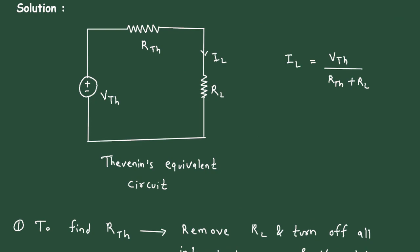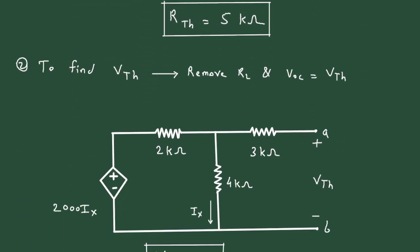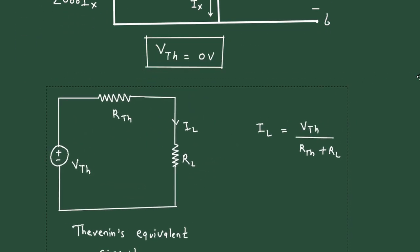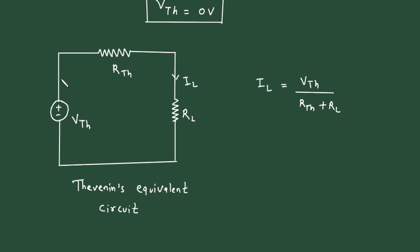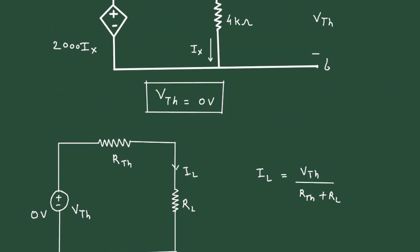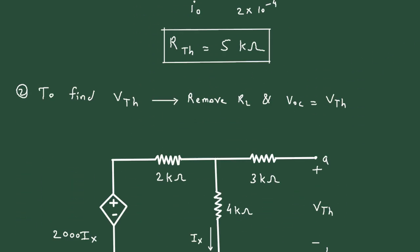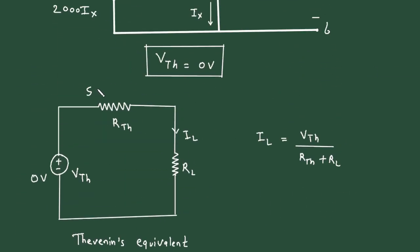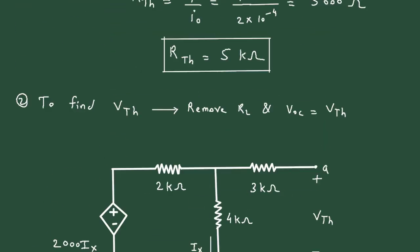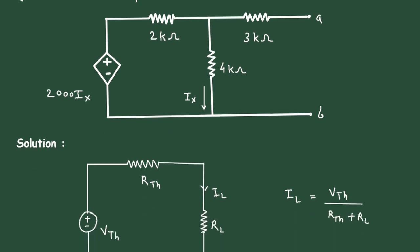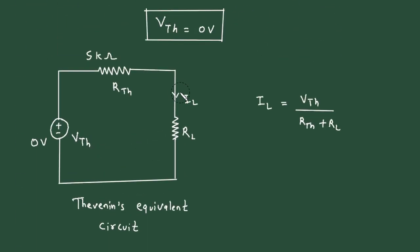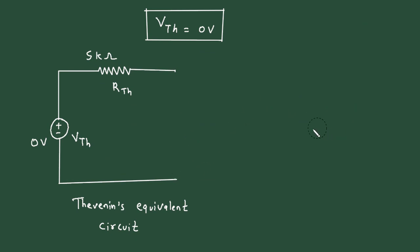Now we can draw the Thevenin equivalent circuit. Substituting the value of Vth, which is 0 volts, and Rth, which is 5 kilohms. The load resistor Rl is absent in this circuit, so it is removed. This is terminal A and this is terminal B. So this is the Thevenin equivalent circuit.